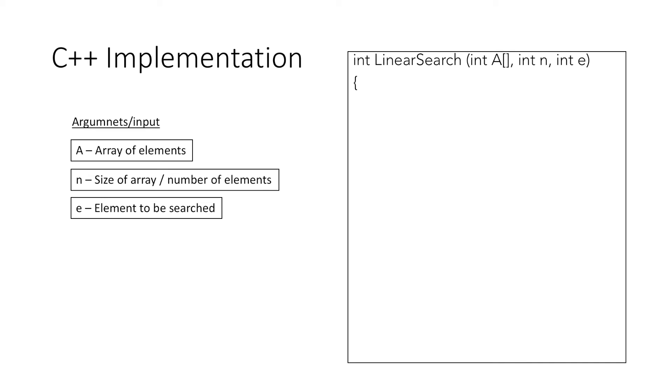the element to be searched. If the element e is found in the array A, our function returns its index, otherwise it returns -1. First, we declare two variables i and index, and we initialize index to -1.